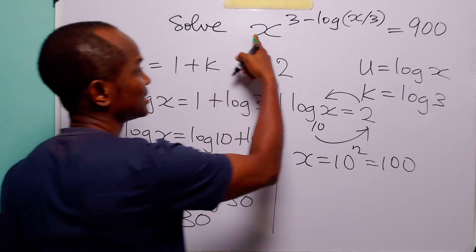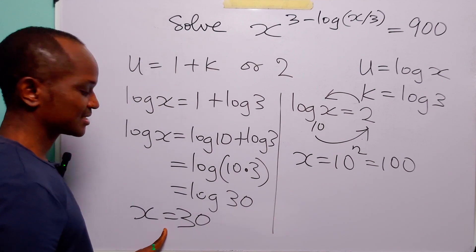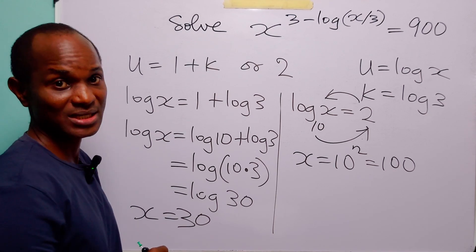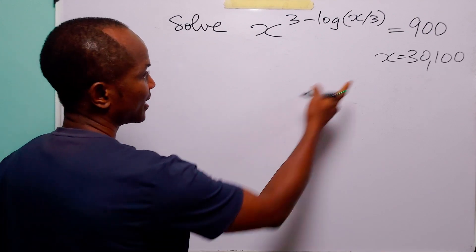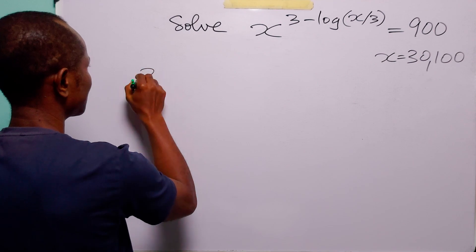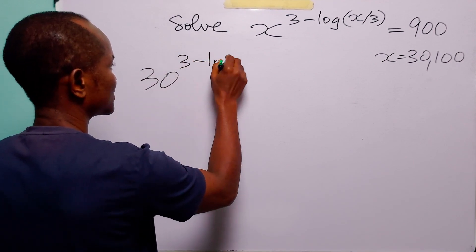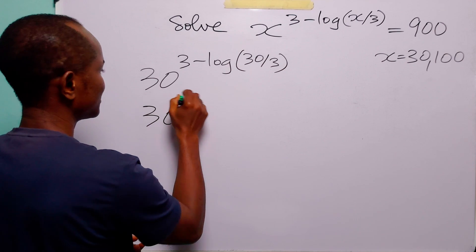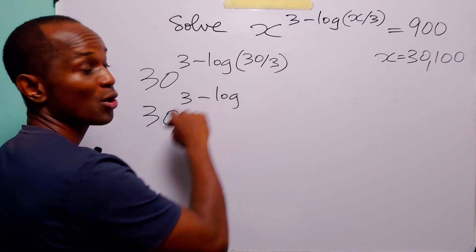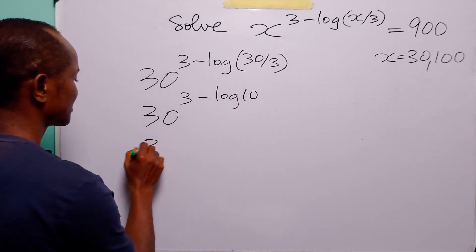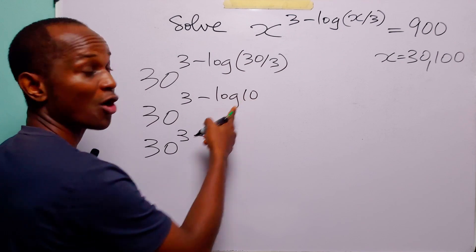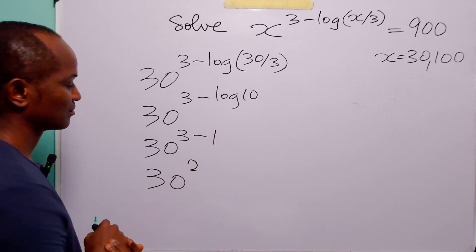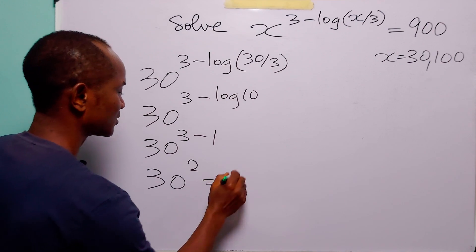We have two solutions: x = 30 and x = 100. Let us verify them. When x = 30, the equation becomes 30 to the power (3 − log 30 / 3). Since log 30 / 3 = log 10 = 1, the exponent is 3 − 1 = 2. So we get 30² = 900. Verified!